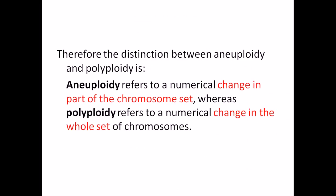Normally, both aneuploidy — the addition or deletion of chromosomes by one — and polyploidy — the change in number of chromosome sets — occur due to the missegregation of chromosomes. If the segregation process doesn't occur properly, these conditions arise.